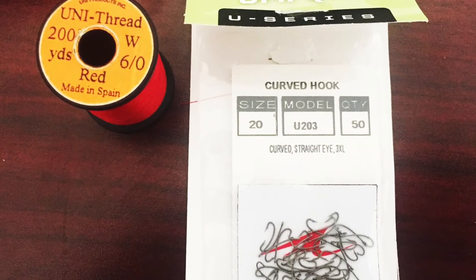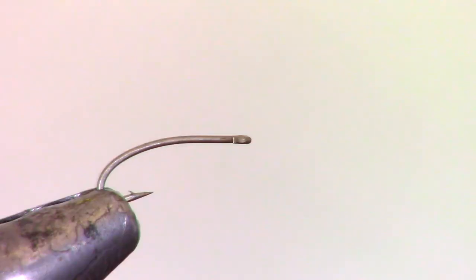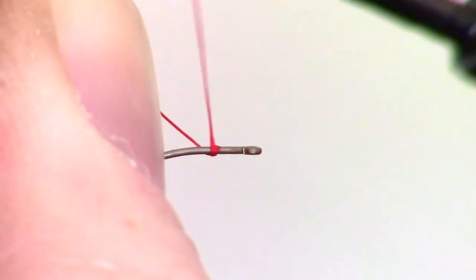You only need a hook and some thread. You can tie these thin with a finer thread or thick with a heavier thread. We will want to start our thread with a little space behind the eye of the hook. You will need this space to whip finish the fly without any bulk.